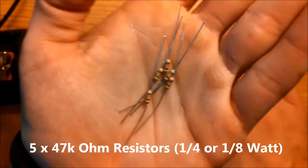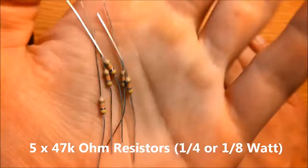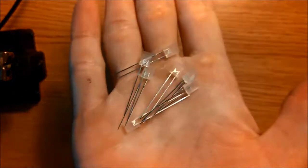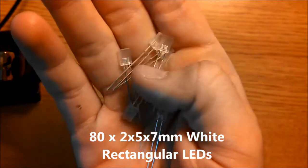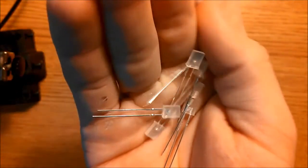You will need 5 47k ohm resistors. These can be one-eighth of a watt or one-quarter watt. You will need 80 rectangular white 2mm by 5mm by 7mm LEDs.